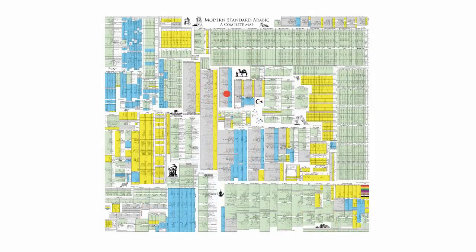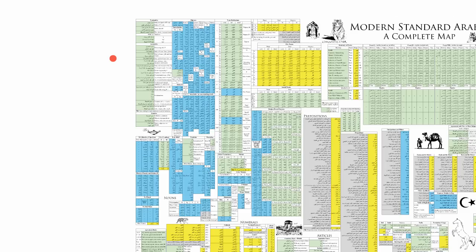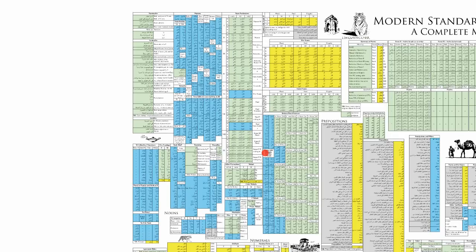Linguisticator's course in Modern Standard Arabic is the only program in the world to provide a complete map of the Arabic language. On this map is every pattern, variation, and exception in Arabic. In other words, everything you need to be able to say whatever you want.